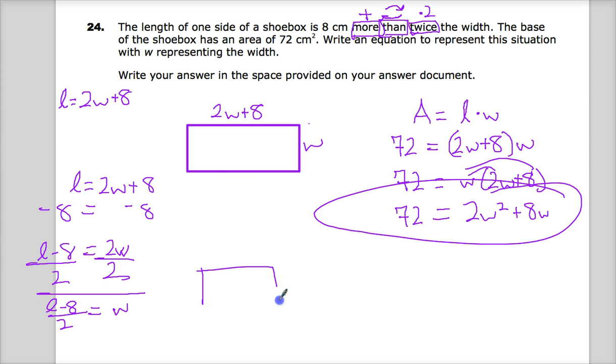W equals L minus 8 divided by 2. They don't ask you to do this here. I'm just covering all the bases. So if they wanted it in terms of L, for the W, you'd put L minus 8 divided by 2. And then you'd put the L up here. You'd substitute those values into this and solve it.